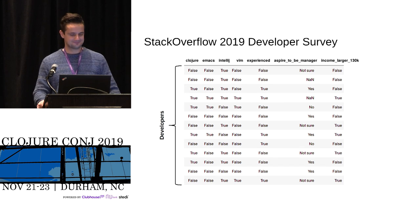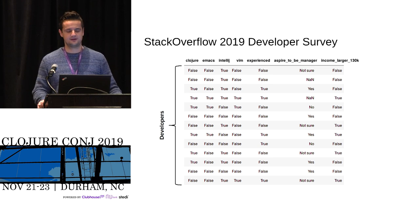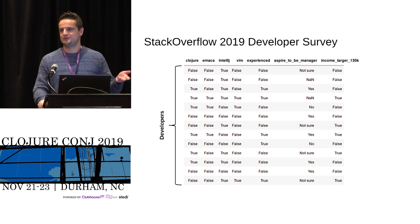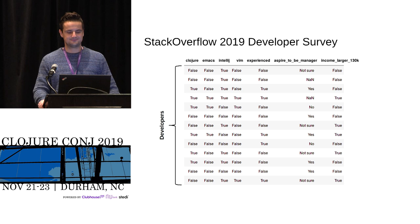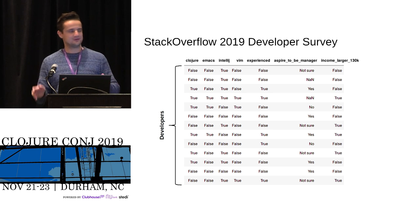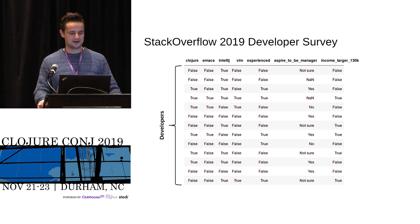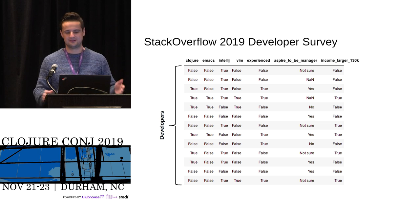Throughout this talk, I will work on a dataset pulled from the Stack Overflow developer survey released this year. I used a subset of it — every row in the data table is a developer, and every column is a question they answered. Do people know Clojure or Emacs? Do they aspire to be a manager? Do they have a large income? I processed this dataset to ensure a balance of Clojure and non-Clojure programmers, using around 500 rows so the data fits on a slide.